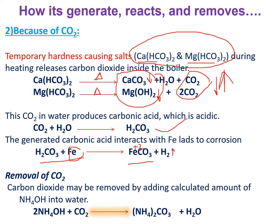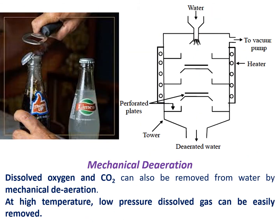How can we remove CO2? When you add ammonium hydroxide to the water, it reacts with CO2 to form ammonium carbonate and water. We can remove this ammonium carbonate by other processes. So we can remove the CO2 this way. To summarize: how CO2 is generated, how it interacts with iron, and how we can remove it.